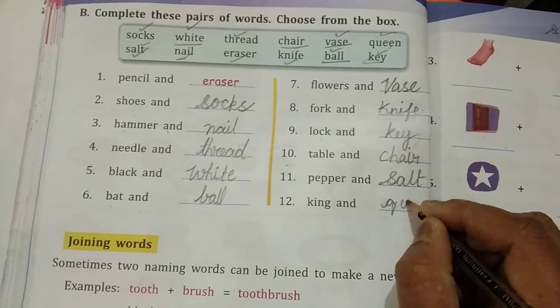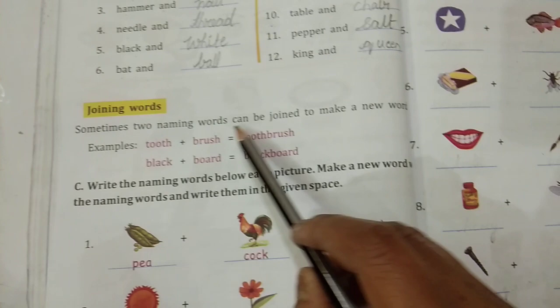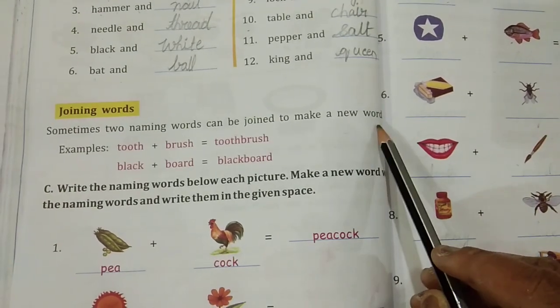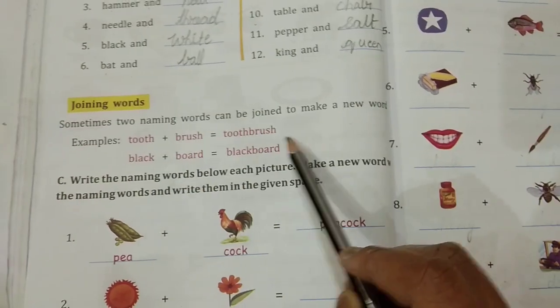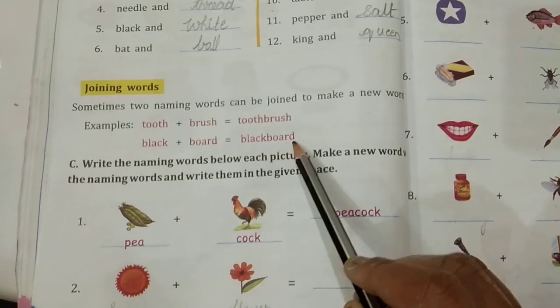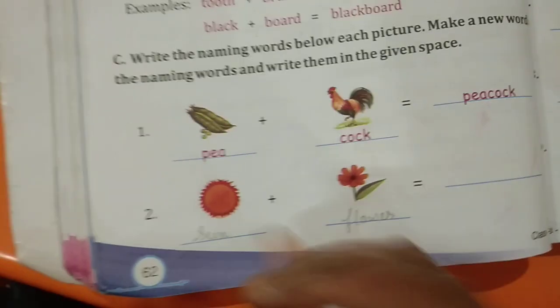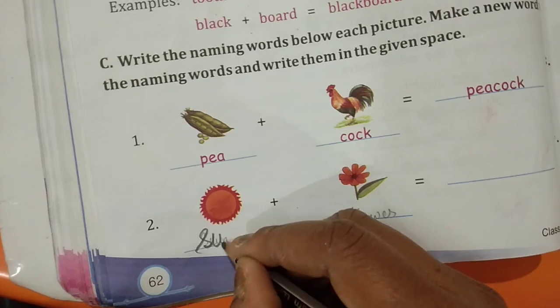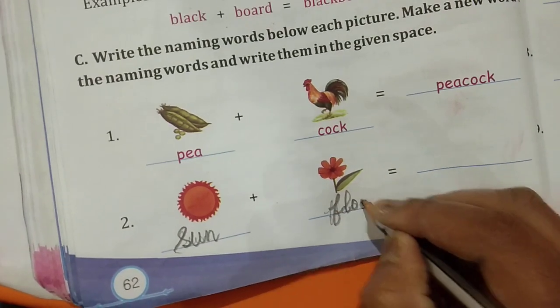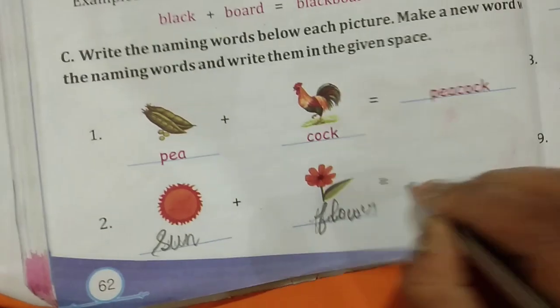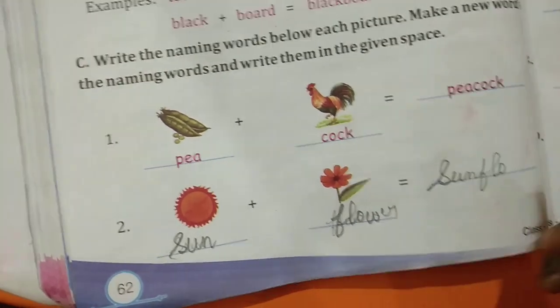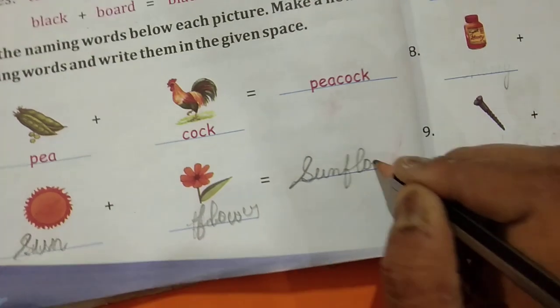Next here, joining words. Sometimes two naming words can be joined to make new words. Example, tooth plus brush, toothbrush. Black plus board, blackboard. Pea plus cock, peacock. Sun, see children here, sun plus flower. Here sun plus flower, sunflower.